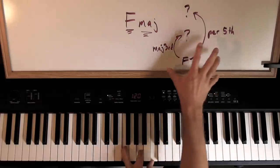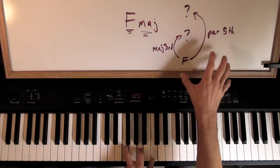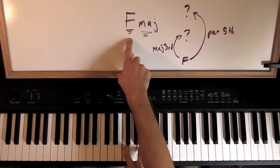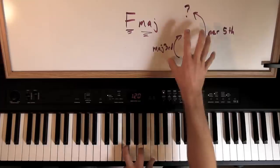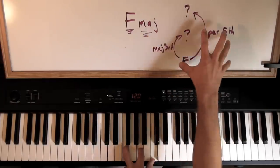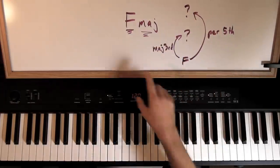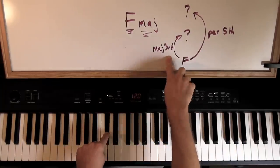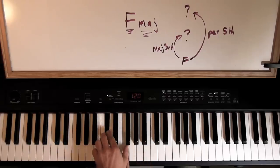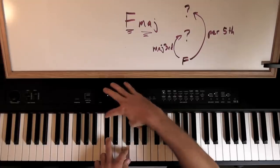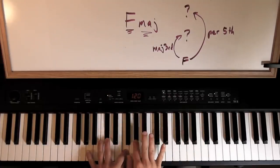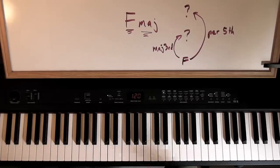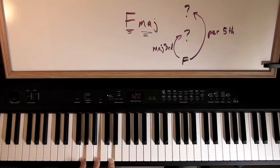That's how a major chord works — root, major third, perfect fifth — and this works for any root note. You can start on C sharp: go up a major third, then a perfect fifth. Start on G: major third, perfect fifth. The formula doesn't change — this is the definition of a major chord.